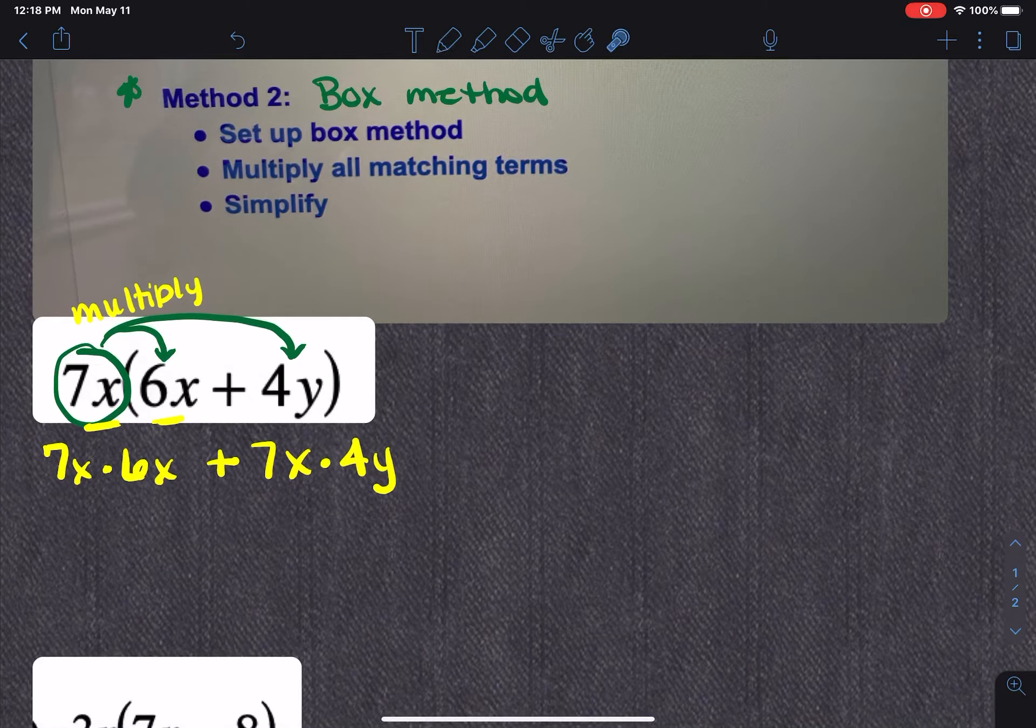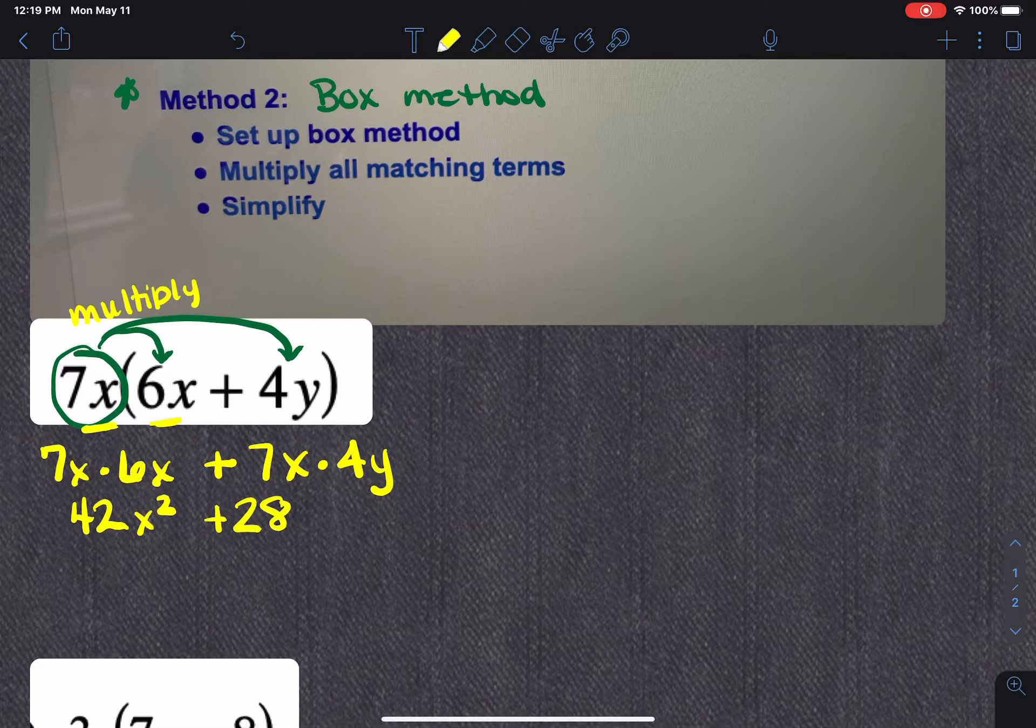Now we're going to simplify that. So if I look at this first piece right here, 7x times 6x, first of all, the 7 times 6 is going to give you 42. And then x times x is x squared. Now if I look at the second one, I have a positive 7x and a positive 4y. So 7 times 4 is going to be 28. And x and y, the most I can do is put them next to each other so that they're in alphabetical order because I can't combine them. So there's our answer.